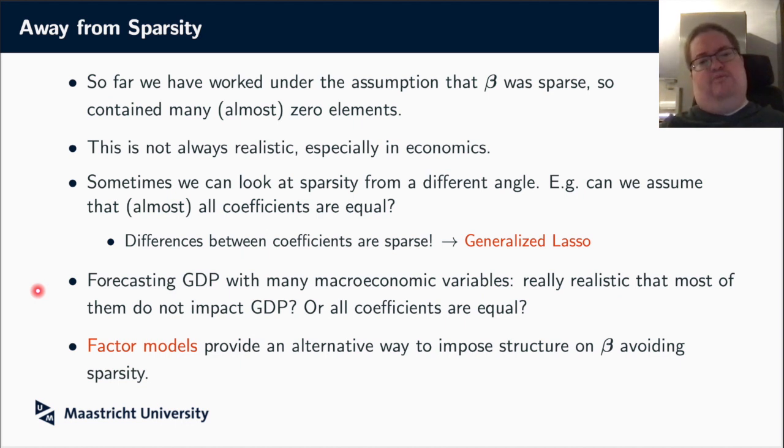So what we will do in the next part of the course is we'll look at an alternative way to impose structure. So we will not be looking at the betas directly anymore, but we're looking instead at axes, the variables, and assume that they are generated by some commonalities. In particular, we call these things common factors. So these factor models provide an alternative way to impose structure on our model.